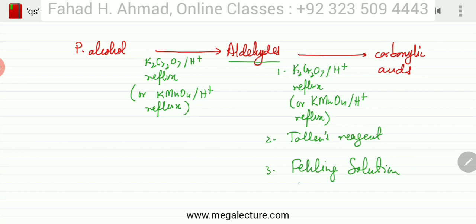Tollens reagent which we just discussed and Fehling solution. So these are the three compounds that can oxidize aldehydes to carboxylic acids.